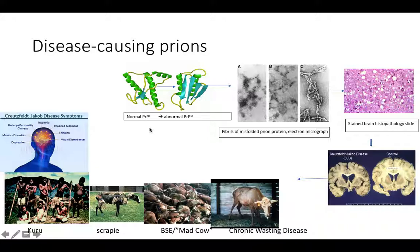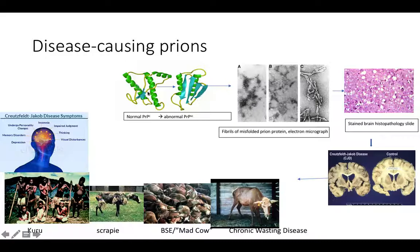Remember, we all have genes for prion proteins, so we all make good, normal cellular prion proteins. PRP stands for prion protein, and the superscript C means cellular for normal. In our good, normal cellular prions, they are rich in alpha helices and have very few beta-pleated sheets. When they misfold, we see a change in secondary structure — a decrease in alpha helices and an increase in beta-pleated sheets.